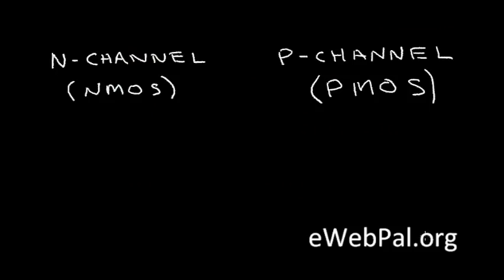There are two basic types of MOSFET transistors. We have the N-channel, which is also called an NMOS transistor, and we have the P-channel transistor, which is also called PMOS. So let's investigate the structure of the N-channel and the P-channel.